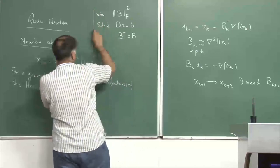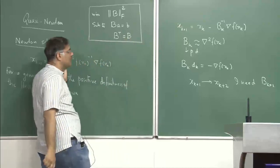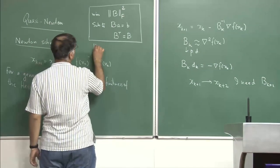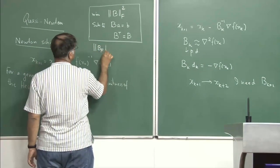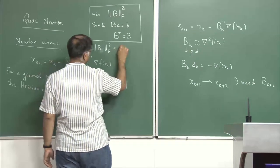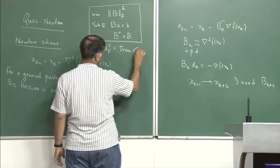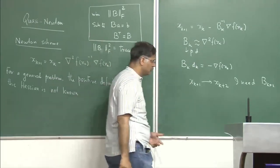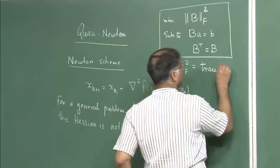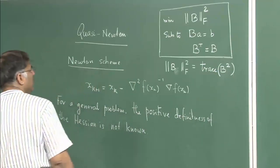The model of the problem we have to solve to find B_{k+1} is called the principle of least change. The Frobenius norm squared of a matrix B is defined as the trace of B times B, that is trace(B²). This is a constrained optimization problem — you want to find a matrix satisfying linear and symmetry constraints while minimizing distance from the current B_k.